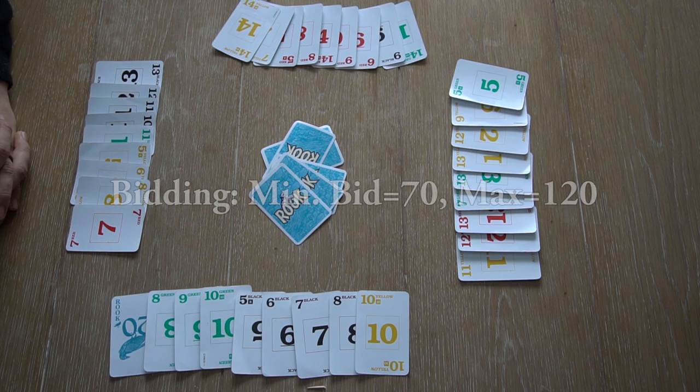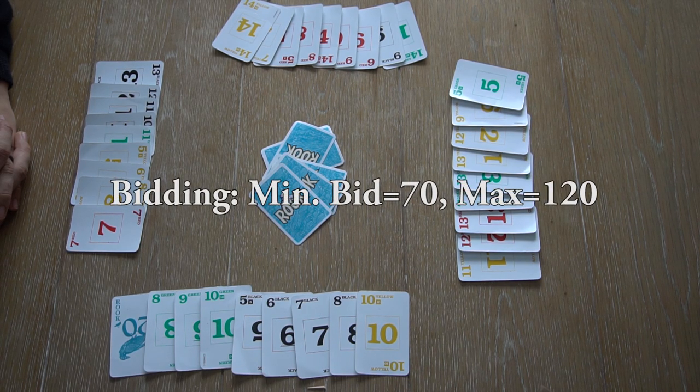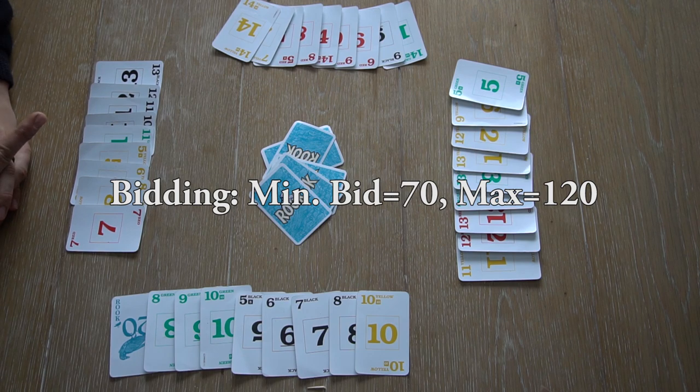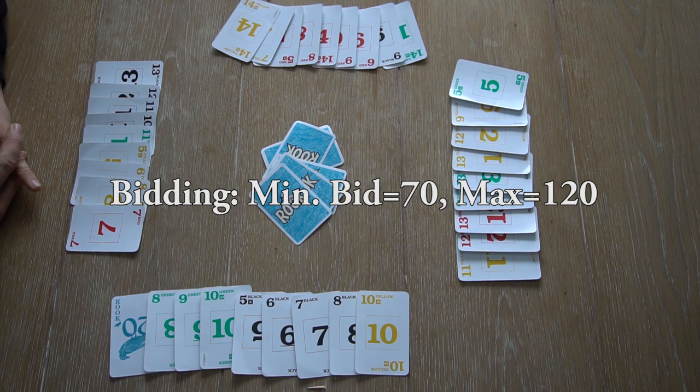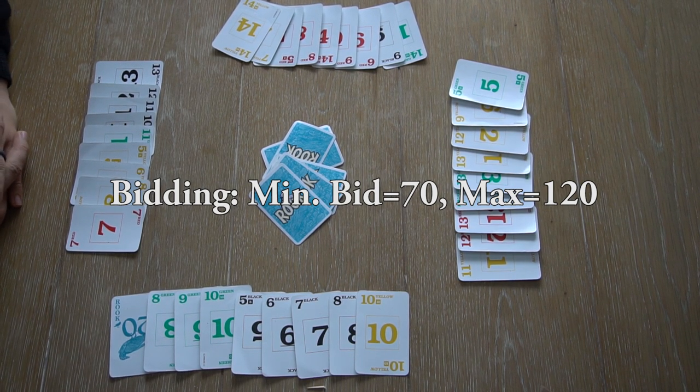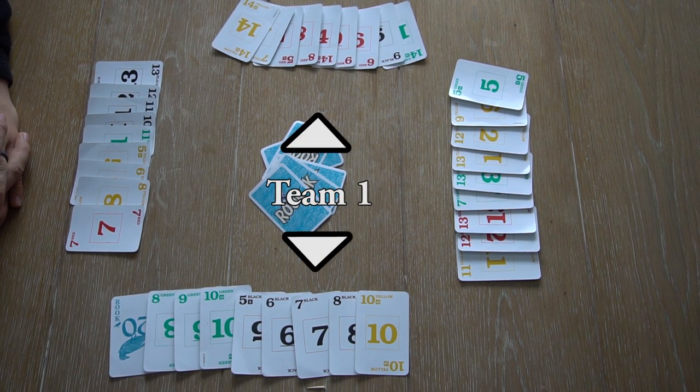The minimum starting bid is 70, and each consecutive bid needs to be at least 5 higher. The max bid is 120. When a player makes a bid, he is essentially claiming that his team will earn that much points in that round.